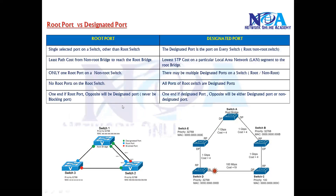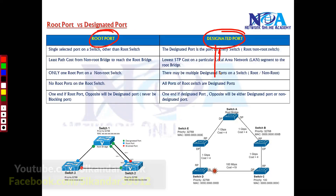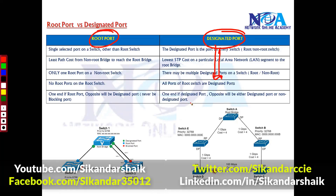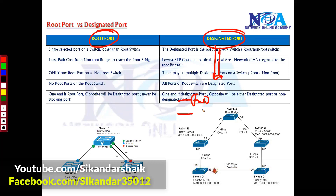So the STP process order: once the root bridge is selected, it will decide the root ports, and then it will decide the designated ports. Designated ports determine how many forwarding paths you can have — only one from every switch to reach the root bridge, and the remaining will be in the blocking state.